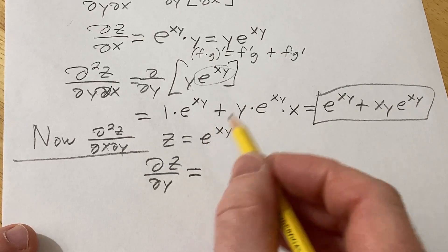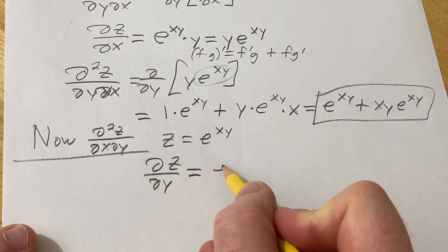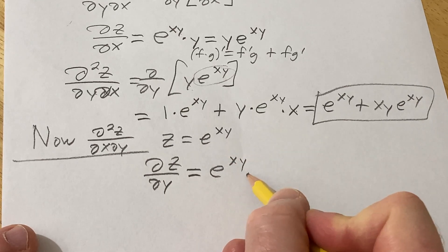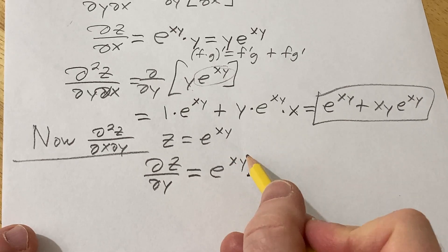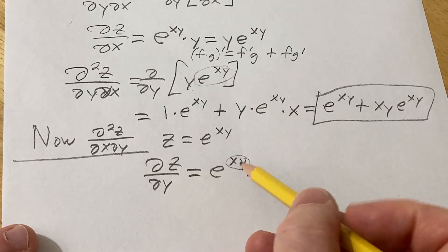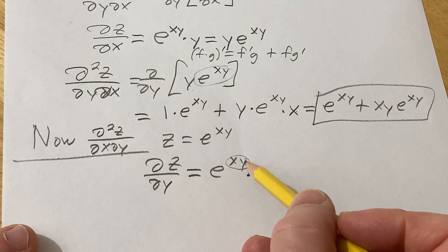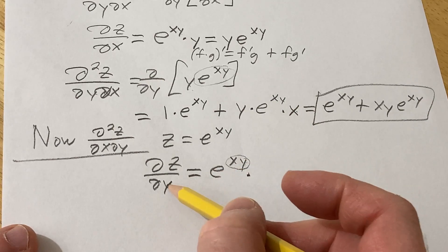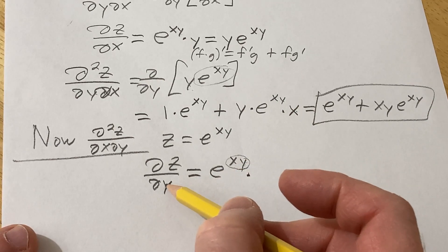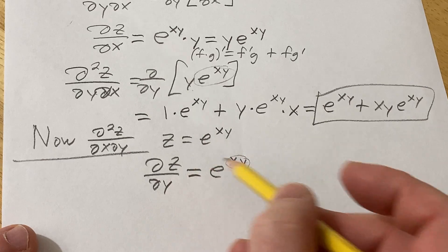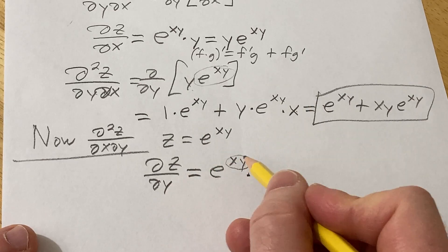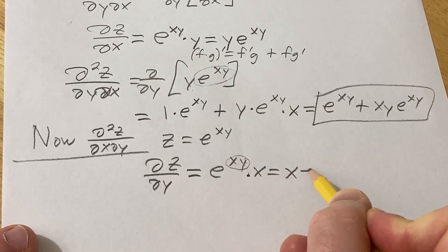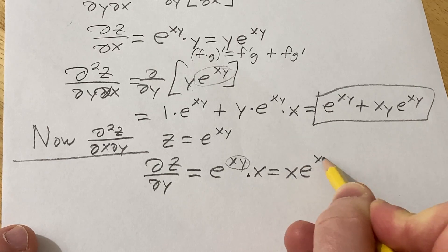For del z/del y, we're going to use the chain rule. The derivative of the outside evaluated at the inside is e to the xy, times the derivative of the inside. We're differentiating with respect to y, so x is a constant. The derivative of y is 1, so you just get x. This gives x·e to the xy.